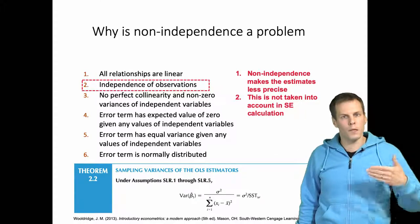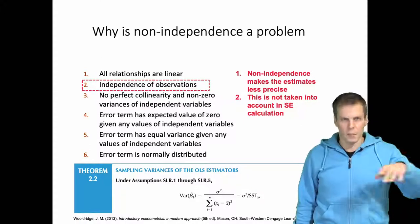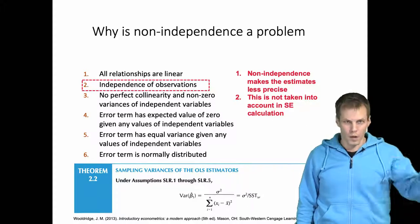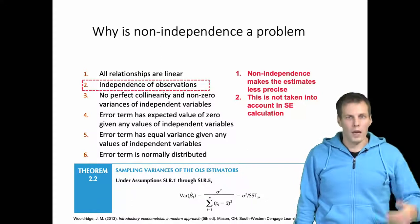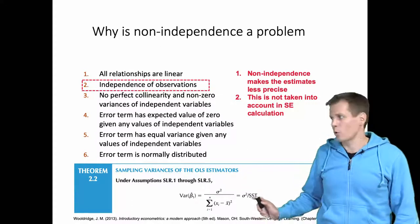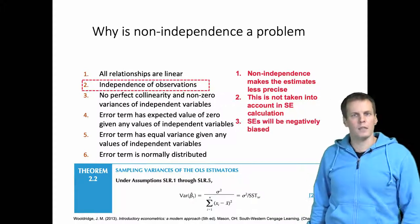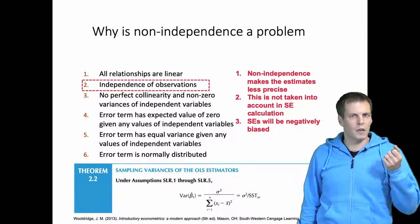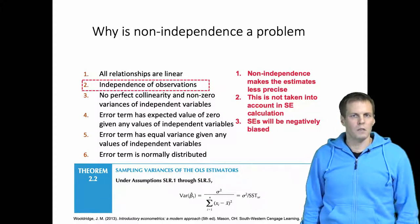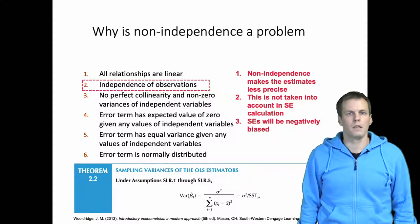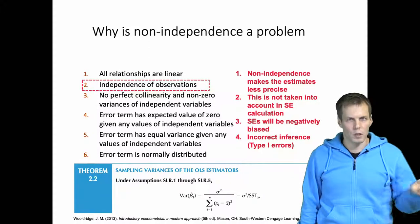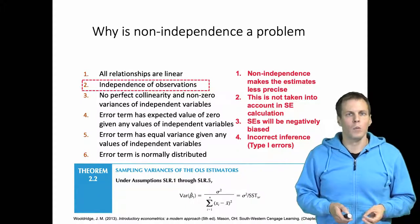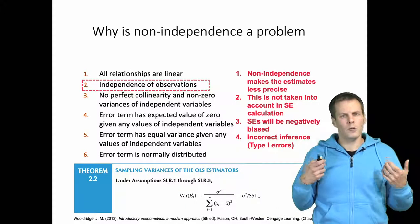Regardless of whether we have five observations each replicated 20 times — so our effective sample size is five but the nominal size appears to be 100 — or whether we actually have 100 unique observations, this formula gives us the same result. The outcome is that when you have clustering, standard errors are generally estimated inconsistently and will be negatively biased. You will overstate the precision of your estimates, causing incorrect inference — particularly false positive findings, rejecting the null hypothesis when it shouldn't be.